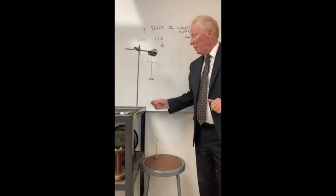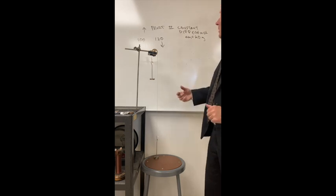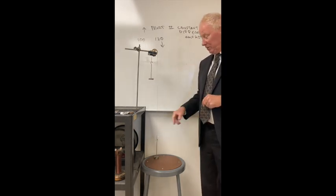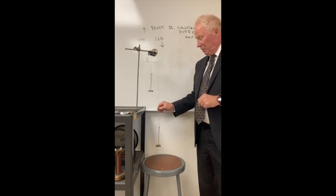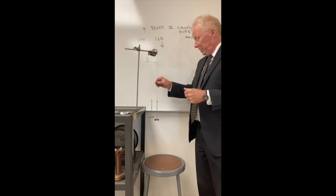For part two, we're going to have the total difference between the two masses constant and then increase them each time, as on data table two. So 100 on the left, 120 on the right. We'll measure the acceleration.